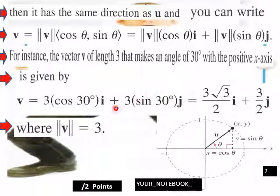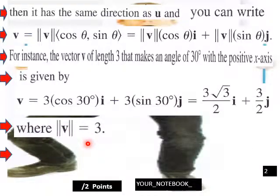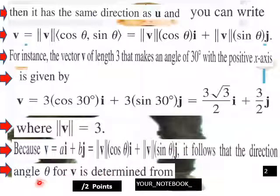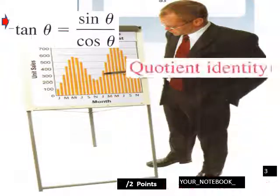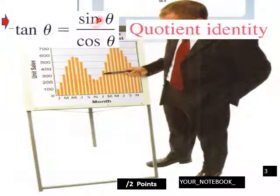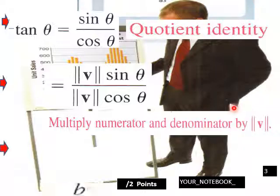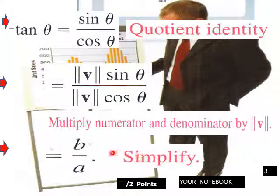Where magnitude equals three. Since v equals ai plus bj equals |v|cosθ i plus |v|sinθ j, it follows that the direction angle theta for v is determined from tan θ equals sinθ over cosθ. Substituting |v|sinθ over |v|cosθ and simplifying yields tan θ equals b over a.